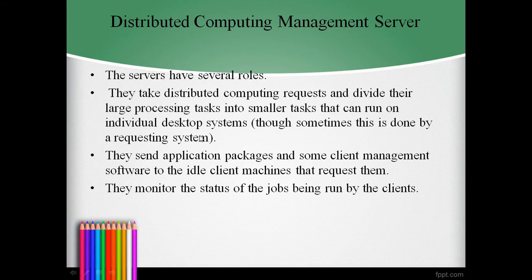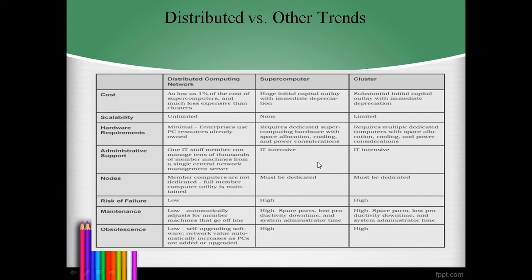Compared to supercomputers and clusters: cost is as low as one percent of the cost of supercomputers and much less expensive than clusters. Scalability is unlimited — you can have two, twenty, two thousand, or two lakh systems. Hardware requirements are minimum, using standard PCs. Administrative support means one IT staff member can manage tens of thousands of machines from a single server management console, whereas supercomputers and clusters are IT-intensive.